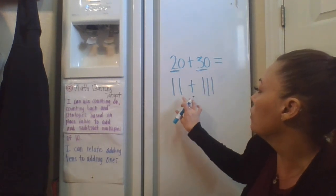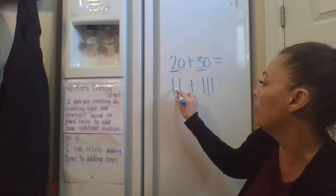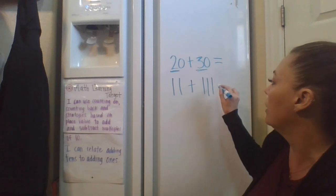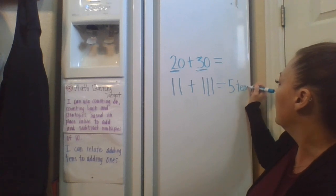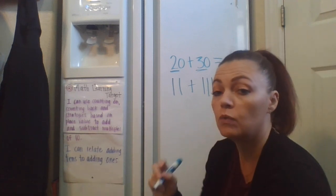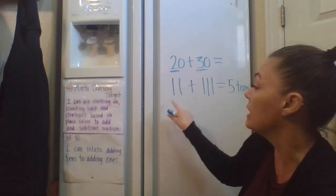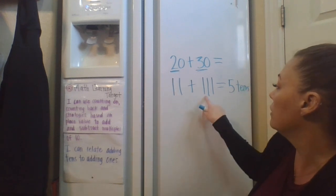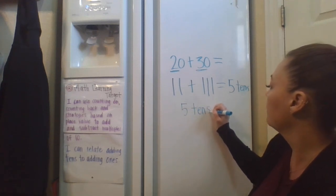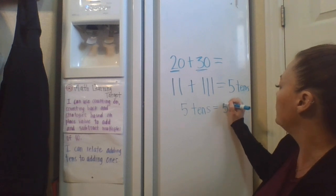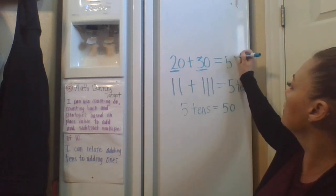So I can look at those and you can either count them or some of you can just look at them and go, I have, I now have 1, 2, 3, 4, 5 tens. And if you guys remember from our tens and ones lessons, we know that if we have 5 tens, we can also count by ten. But we have 10, 20, 30, 40, 50. So 5 tens equals 50. So 20 plus 30 equals 50.